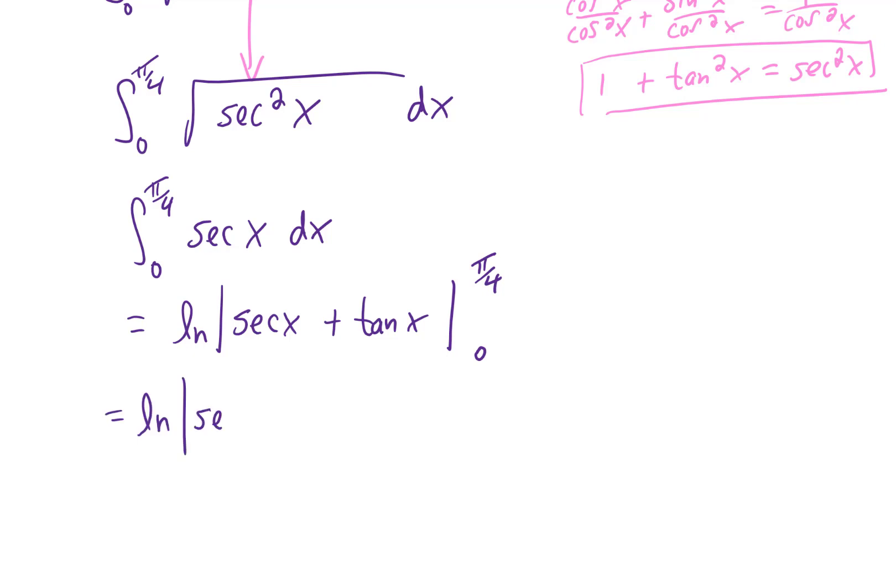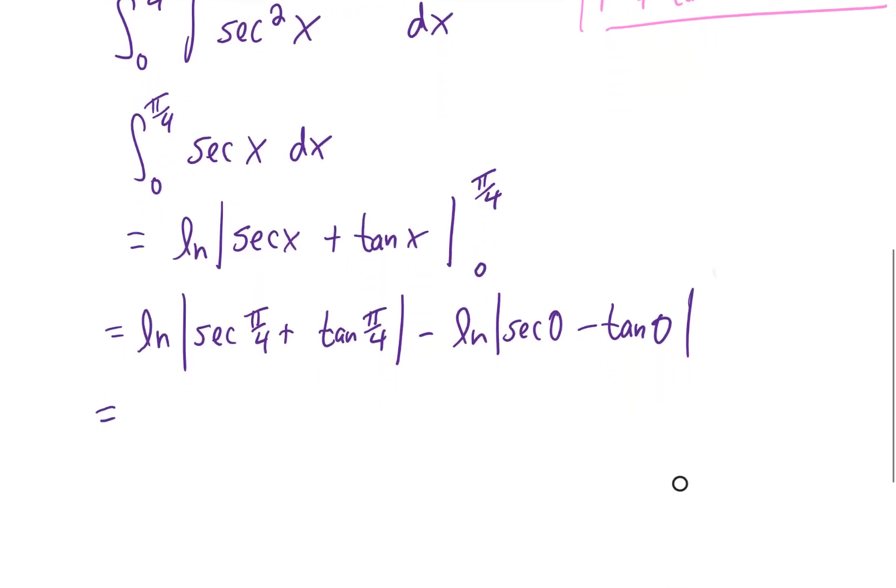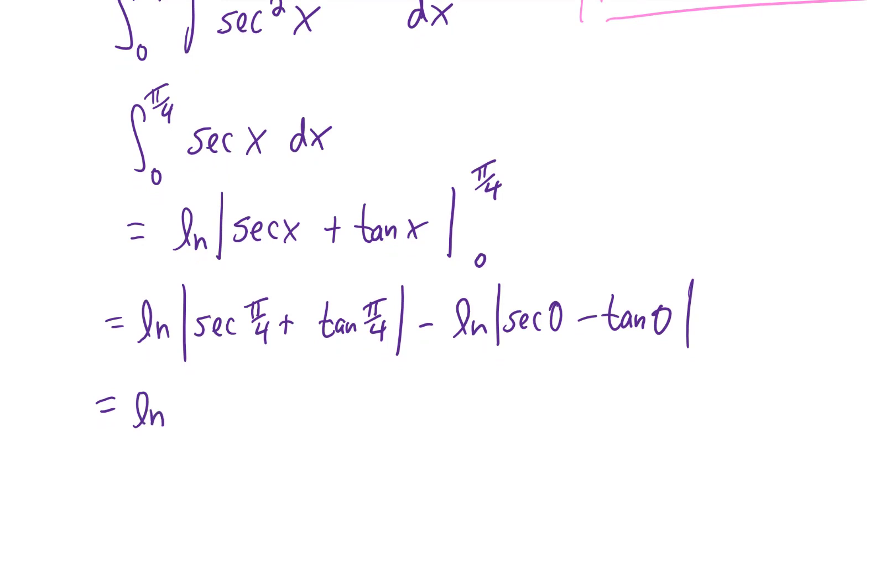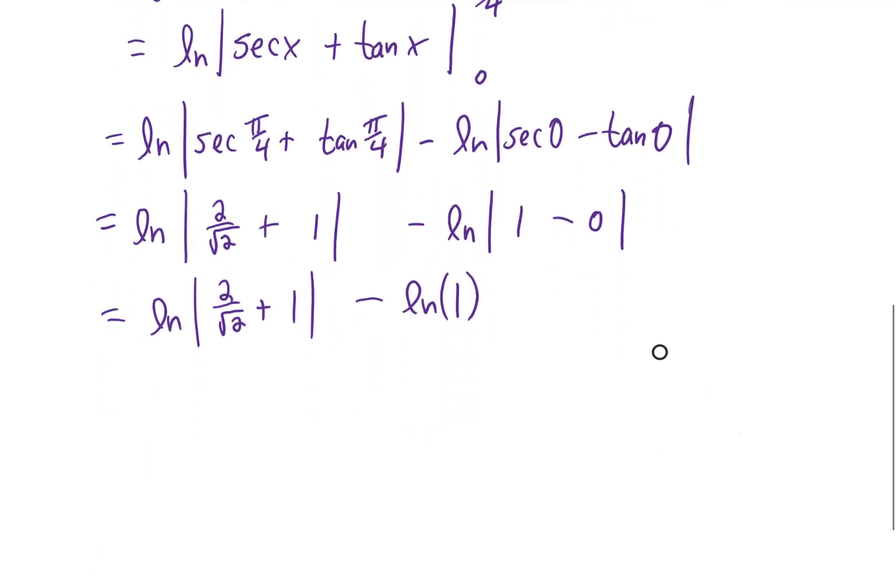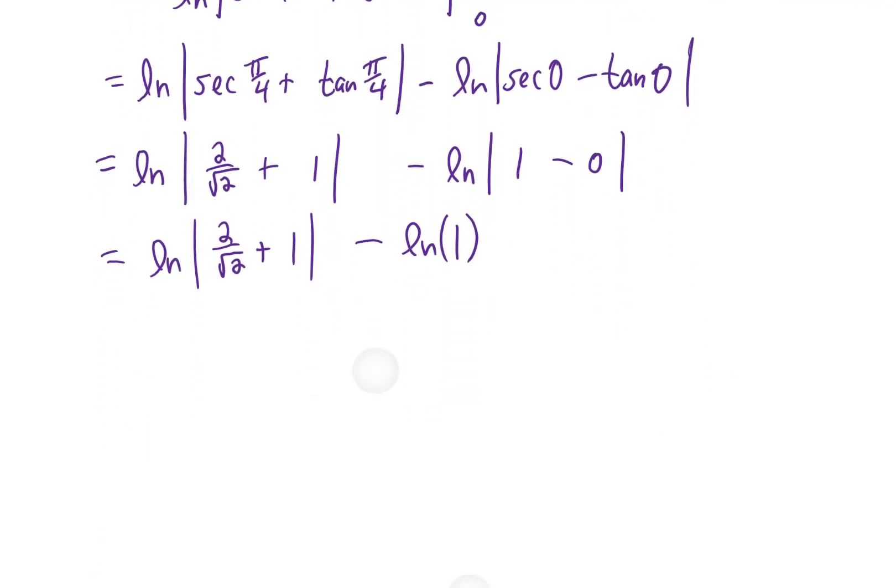Plugging in our upper and lower limits of integration and recalling the things that we definitely need to know from the unit circle, we get this as an answer. We should remember that natural log of one is just zero. You could also write two over the square root of two as just the square root of two. And I think that this final answer right here looks pretty nice.